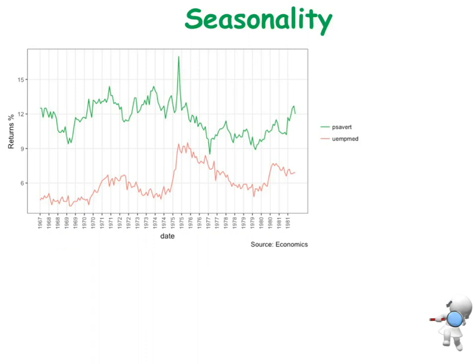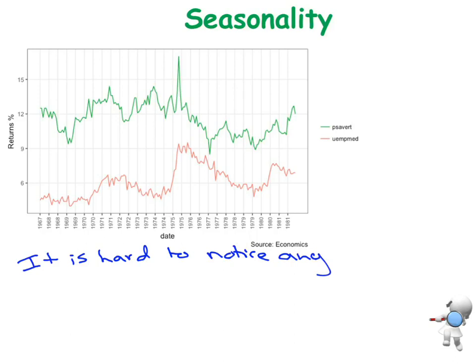Now let's have a look at seasonality. This particular graph is actually much harder to see seasonality in. Apart from the lines going up and down repeatedly, we don't have enough information to know which months it's rising or lowering. So all I'm going to note here is that it is hard to notice any seasonality in this graph — it's just too difficult for this particular one.